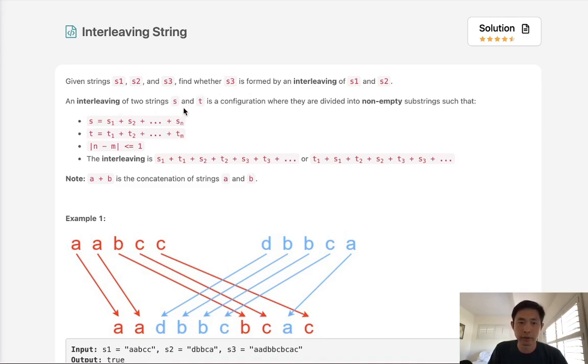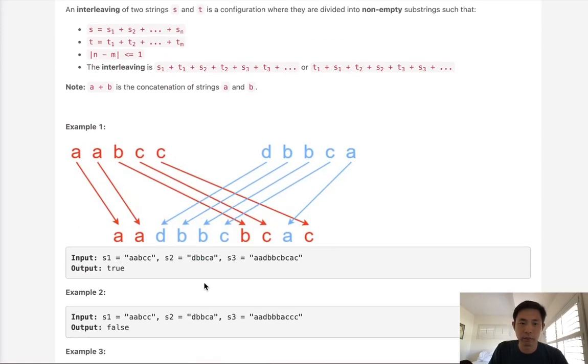Now an interweaving of two strings, S and T, is a configuration where they are divided into non-empty substrings such that S1 plus S2, so on and so forth, T1 plus T2, and the interweaving is going to be like some combination of S1 plus T1, S2 plus T2, so on and so forth. Now we want to see if we can form this string here using these two strings.